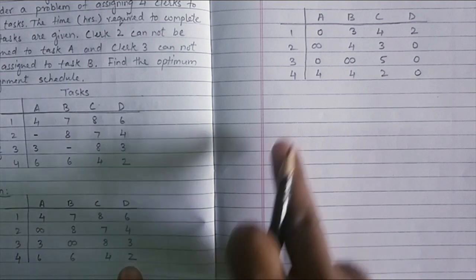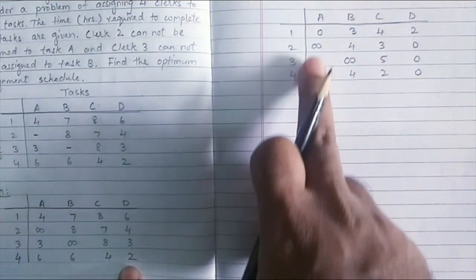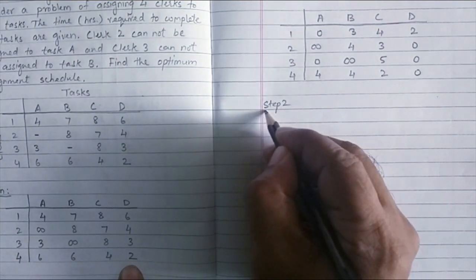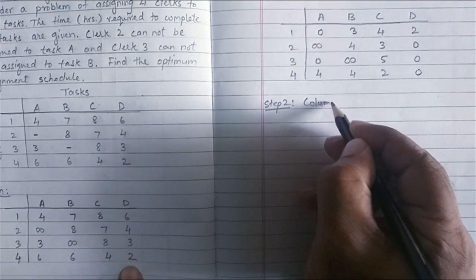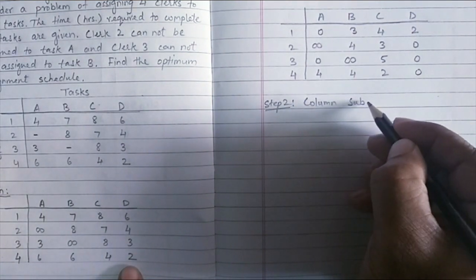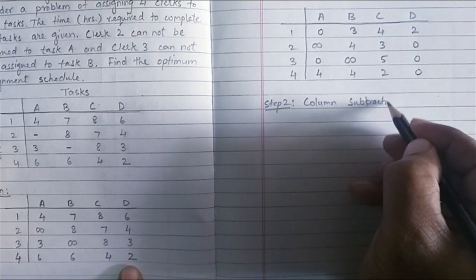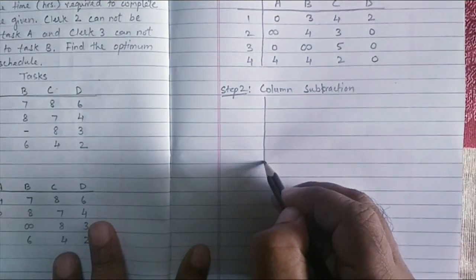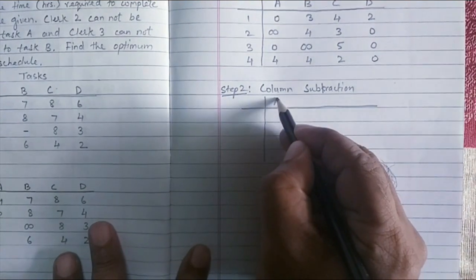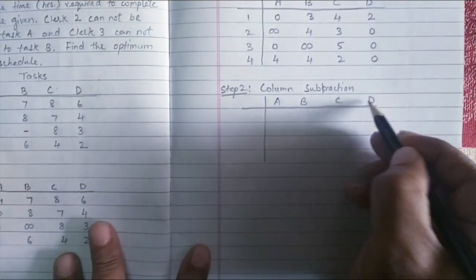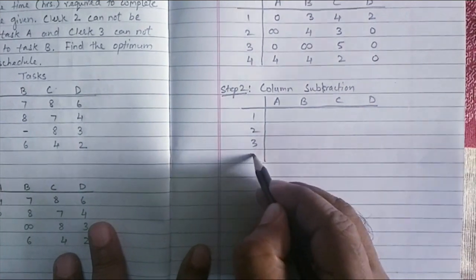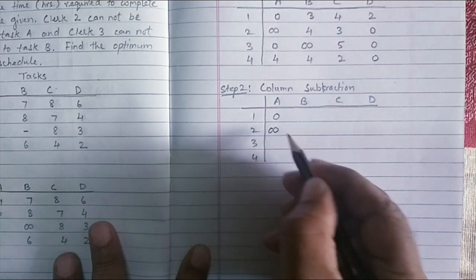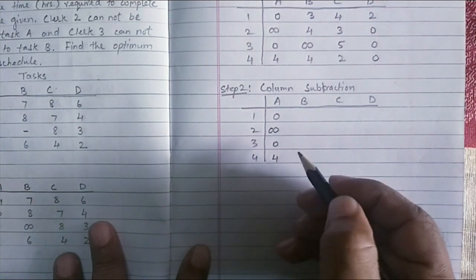If you look at the problem here, we have the first column which is having a zero. So when we do the column reduction in step number two, there won't be any change in the first column. So let us do the column subtraction and get the new reduced matrix A, B, C, and D, one, two, three, four. The first column remains as it is because there is no change. Minimum value is zero. So the subtraction will hardly matter.